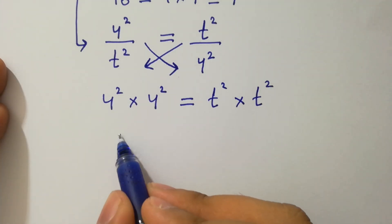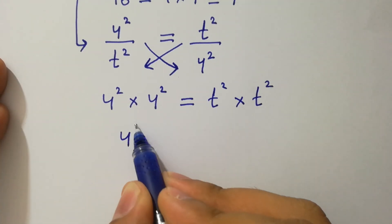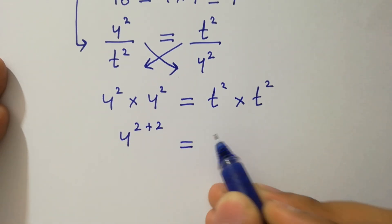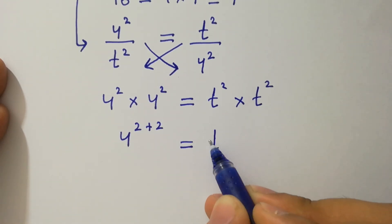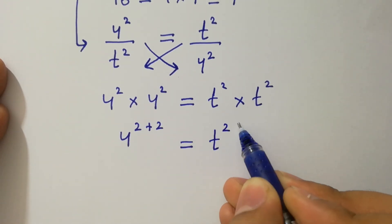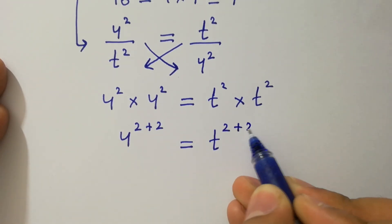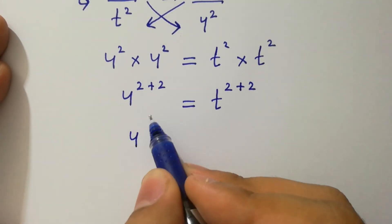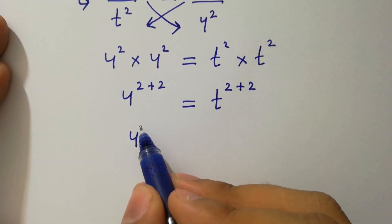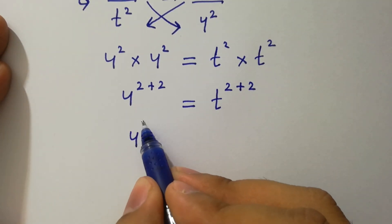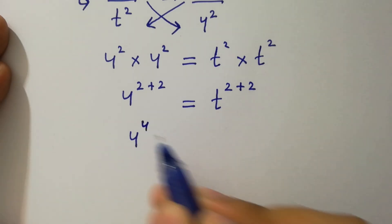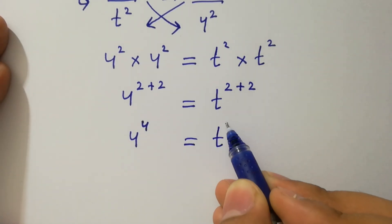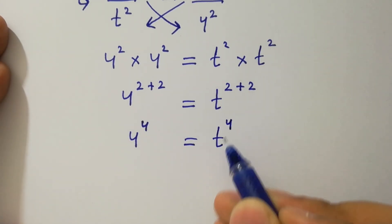So we have 4 to the power 2 plus 2 equal to t to the power 2 plus 2. That is, 4 to the power 4 equal to t to the power 4.